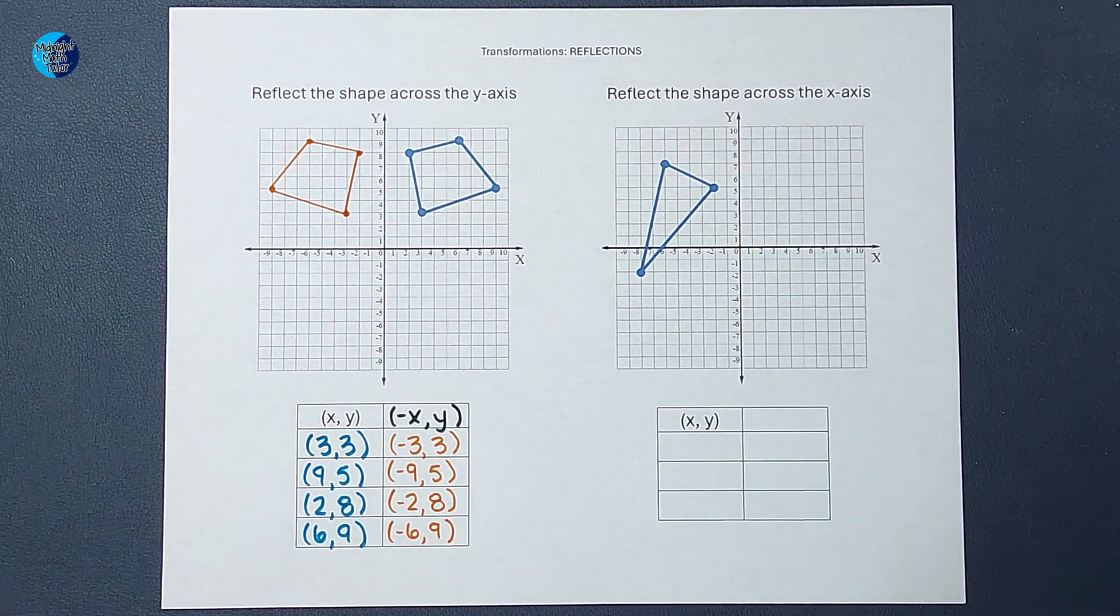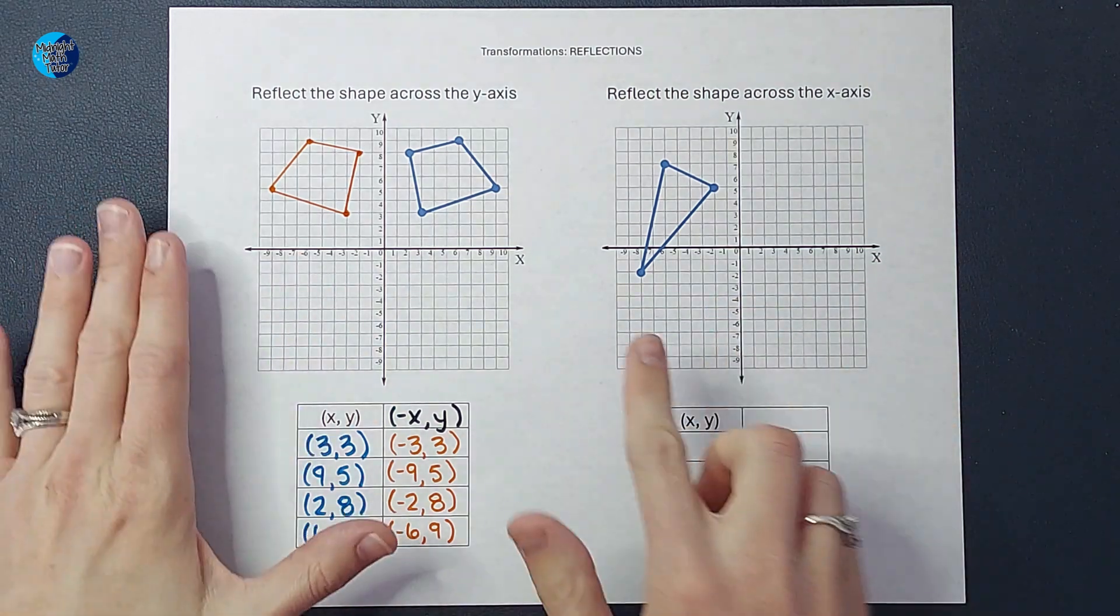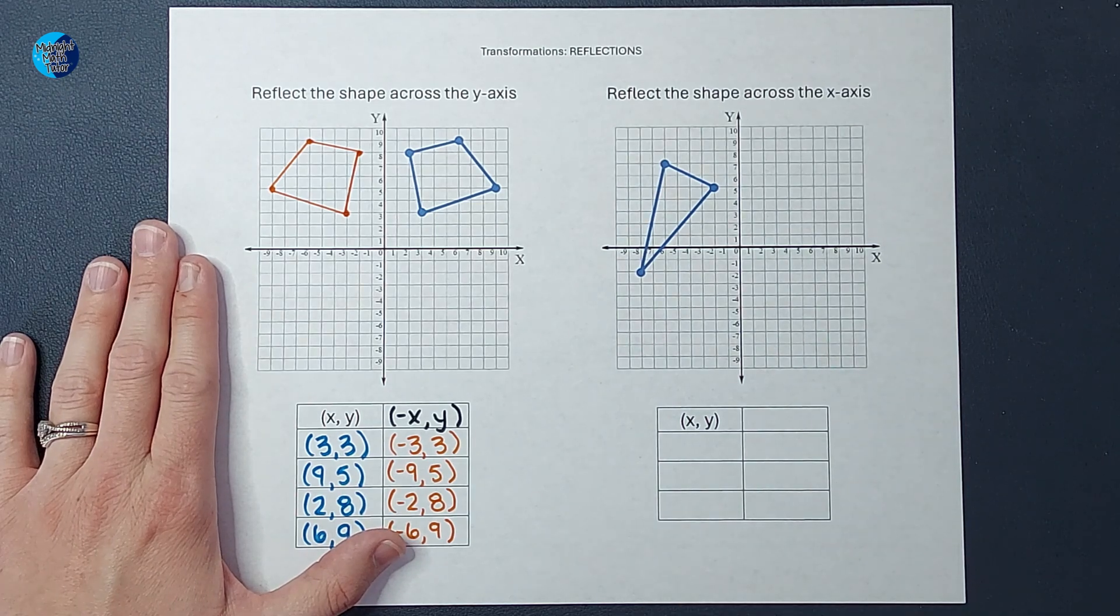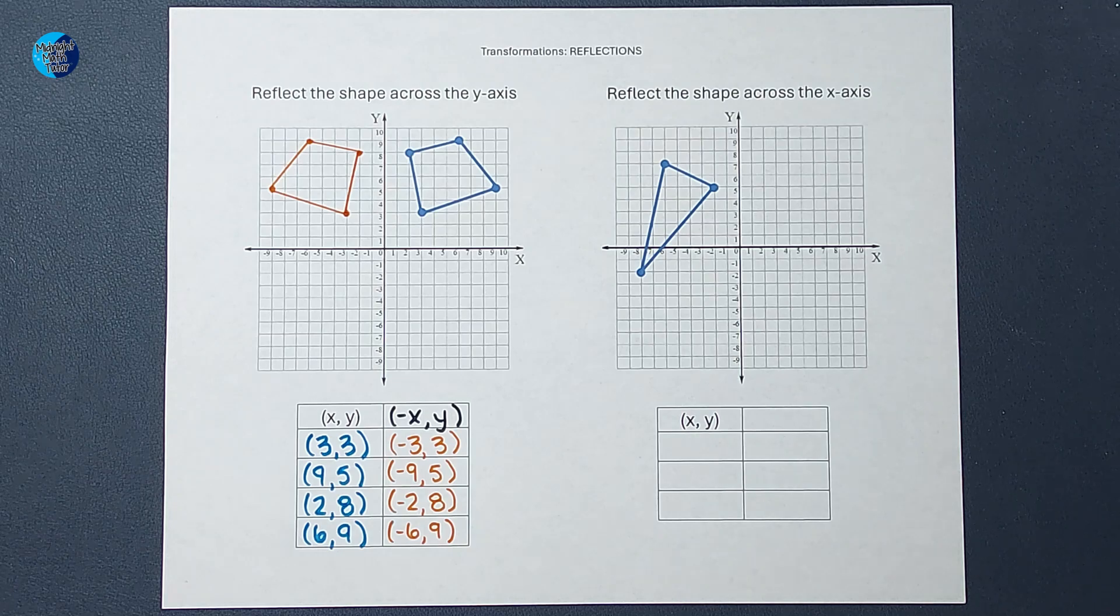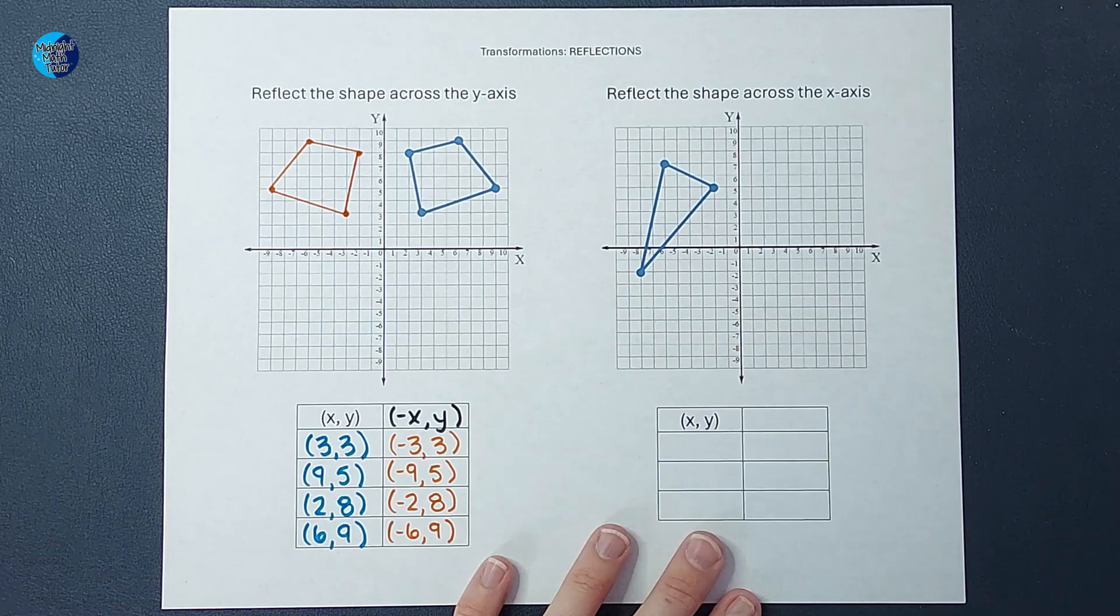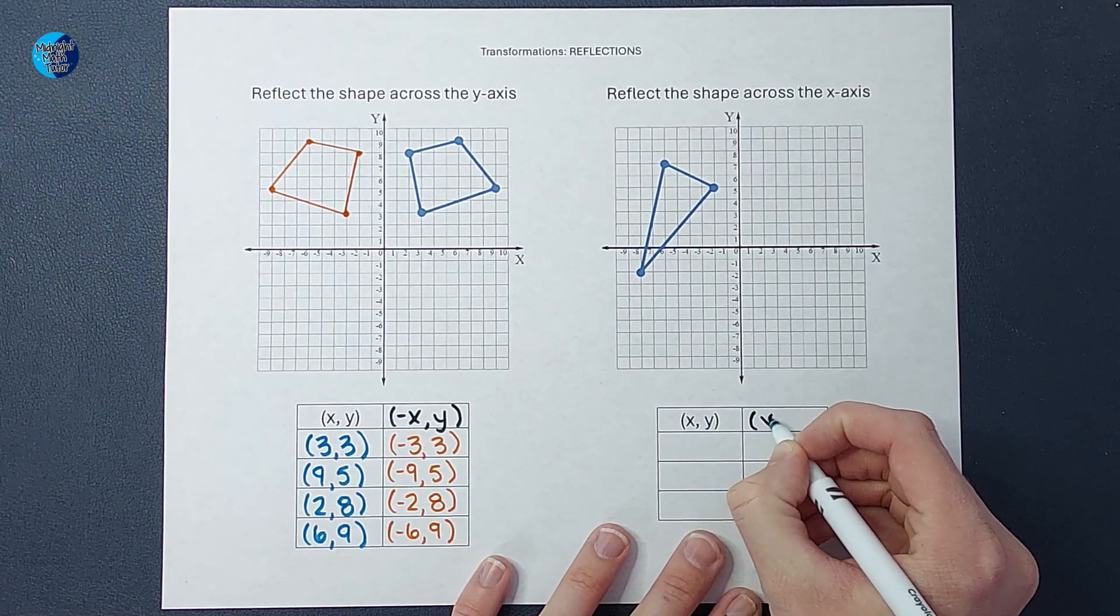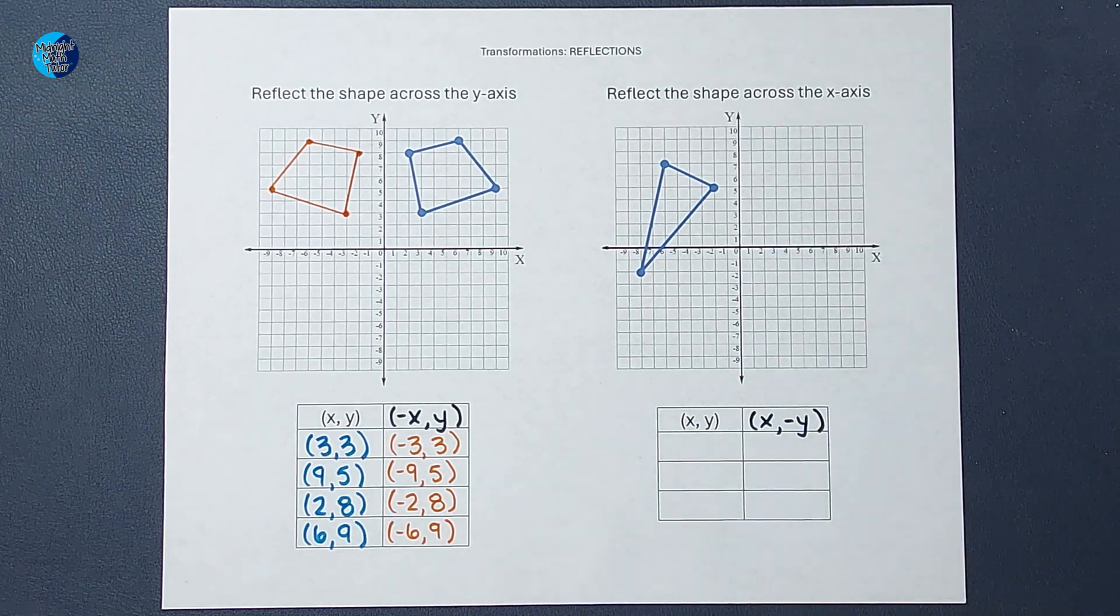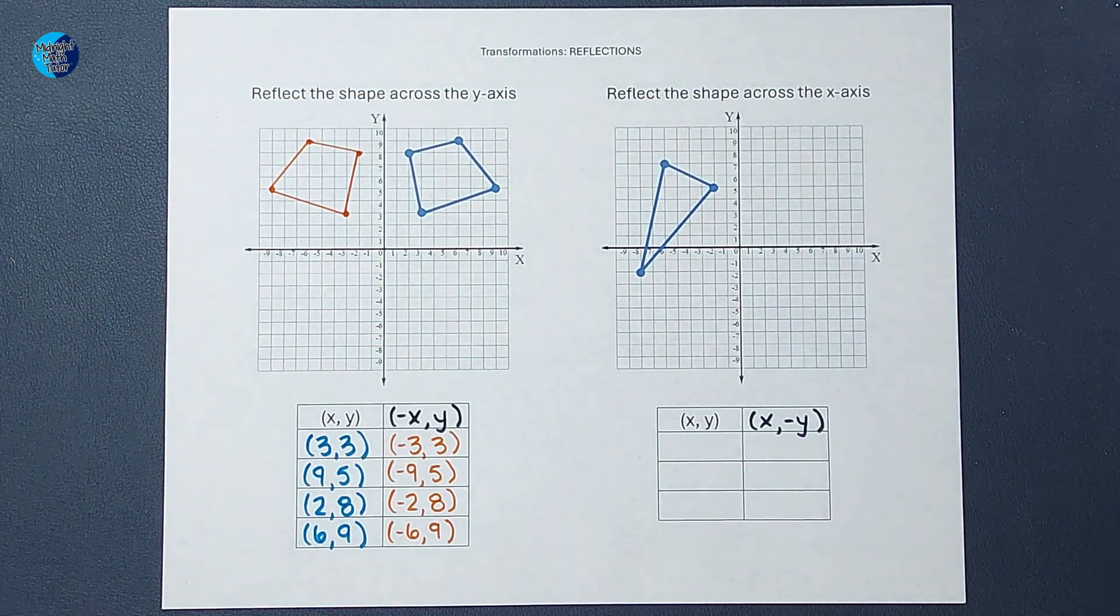Okay, we're going to do the same thing over here, but we are reflecting it across the x-axis. Now this is a little interesting because you see it crosses the x-axis, but that's okay. We're still going to reflect over it. So let's see what that looks like. If you paid attention here, you can probably guess my ordered pair over here to reflect across the x-axis. x is going to stay the same, and we are going to change y's sign.